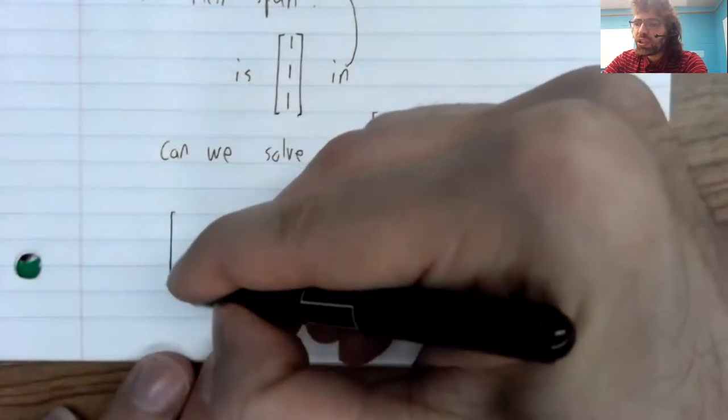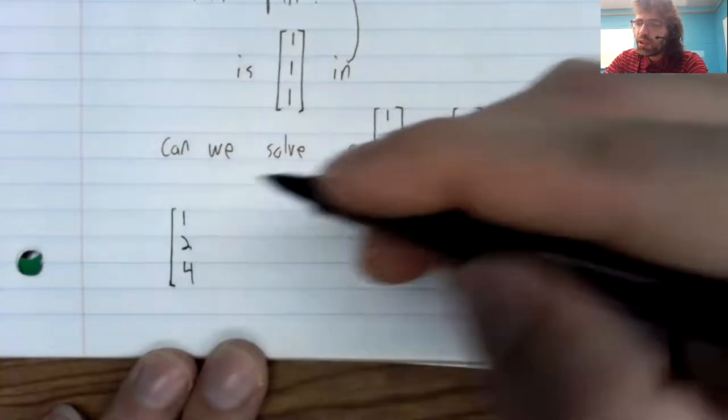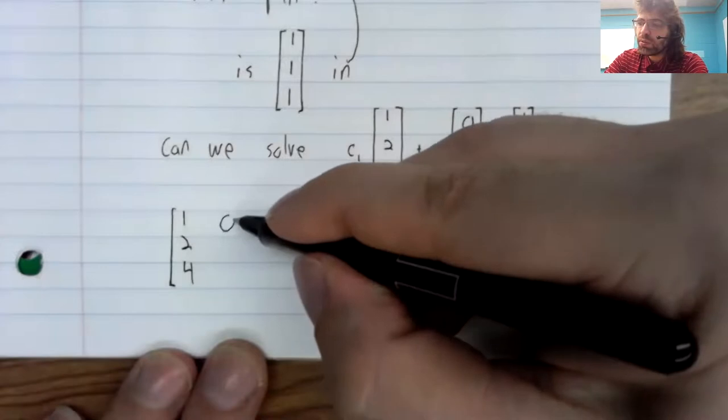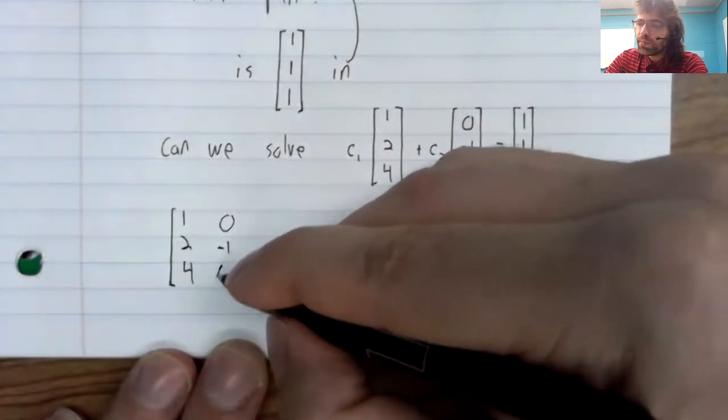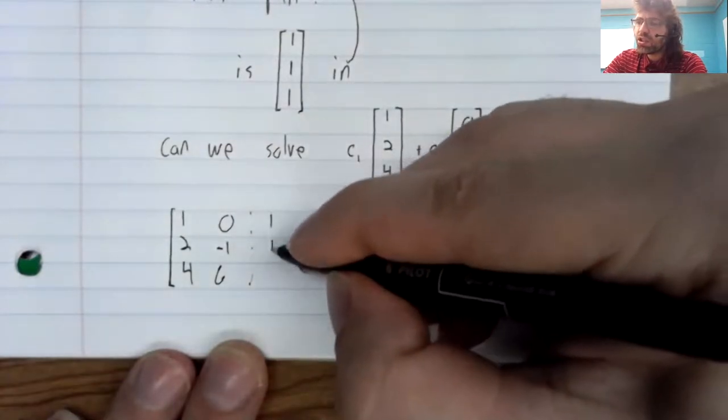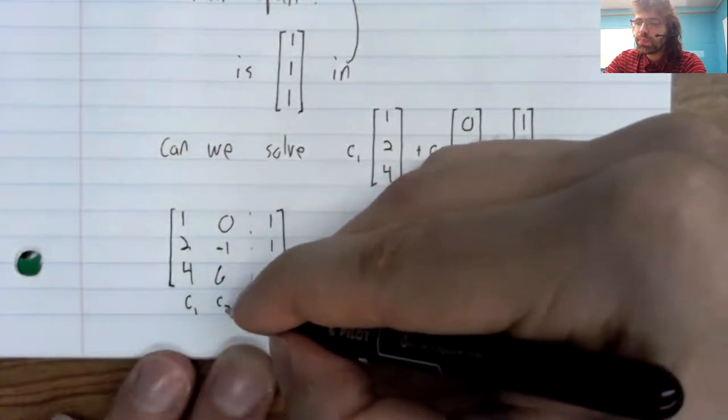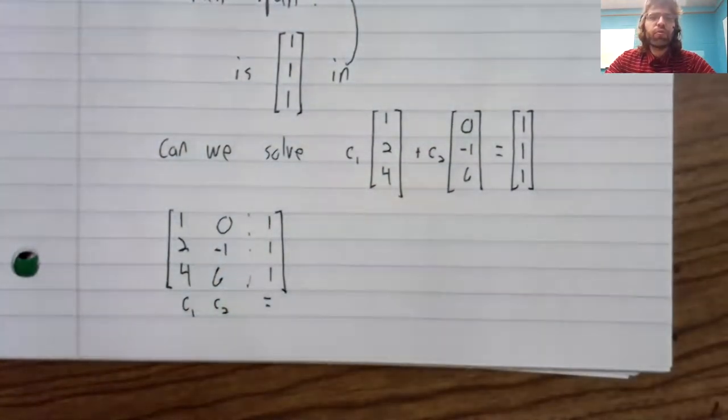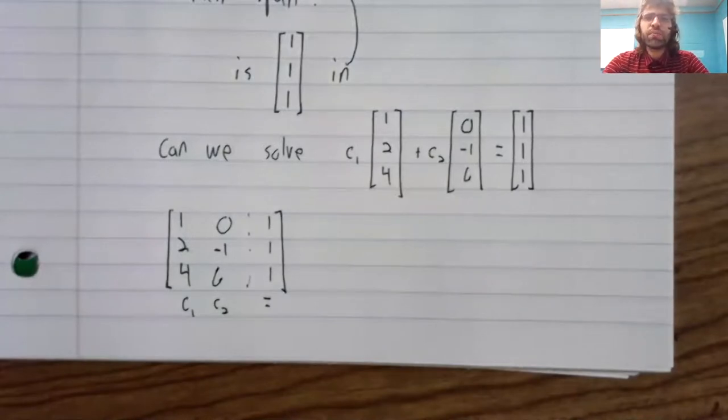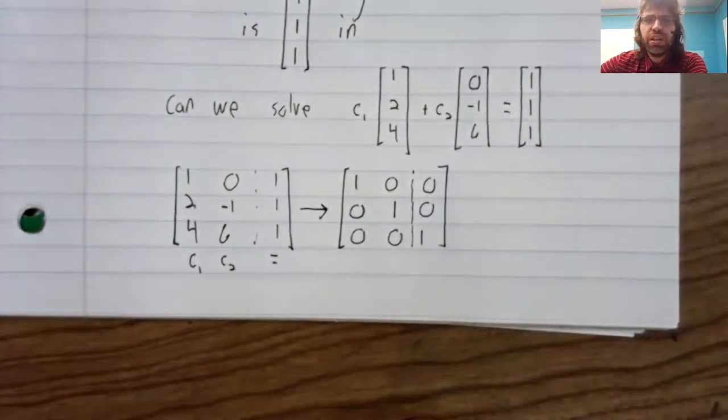In particular, on the matrix that has these vectors as its columns. If we perform Gauss-Jordan elimination, we answer that question in the negative.